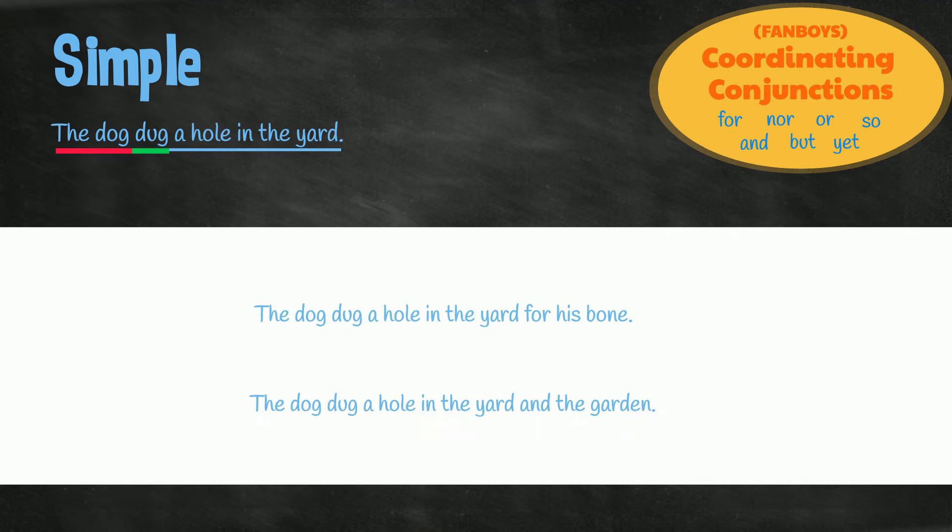These sentences, for example, are still simple, even though for and and have been used. Can you see why? The words for and and here don't join independent clauses. This is not a complete thought, and neither is this.